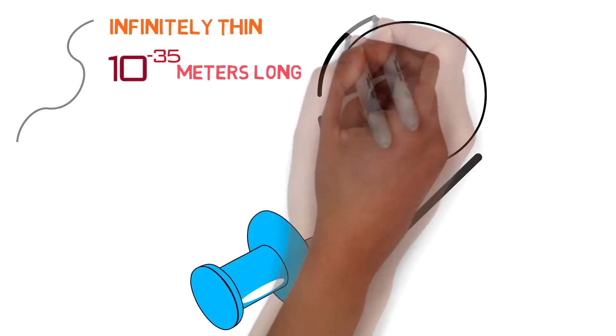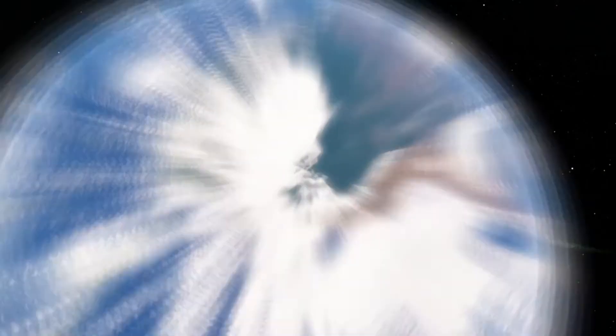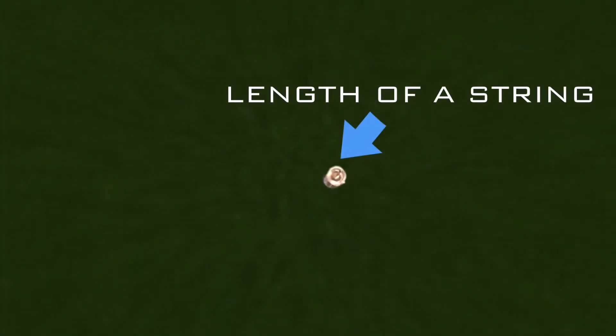This may be a little hard to visualize, so let's put this into perspective. If we were to take the head of a pin and magnified it to the size of the observable universe, and then placed another pin inside that universe-sized pin, then the head of the new pin would be the length of a string.